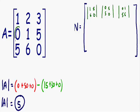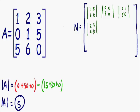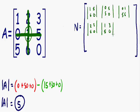For the middle left number, 0: cross out its row and column and we're left with the 2 by 2 matrix 2, 3, 6, 0. Place that in the middle left position. For the center number, 1: crossing out its row and column leaves 1, 3, 5, 0. For the middle right number, 5: crossing out its row and column leaves 1, 2, 5, 6. Place that in the middle right position.